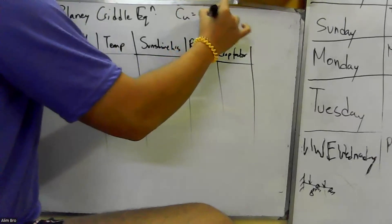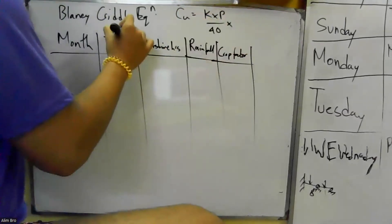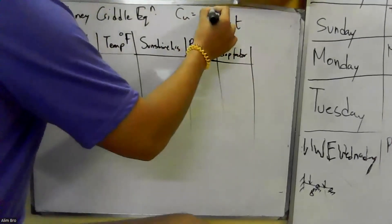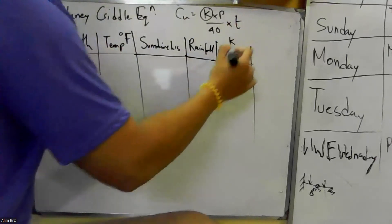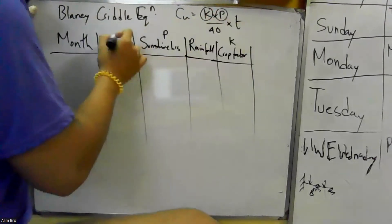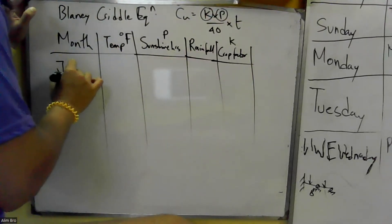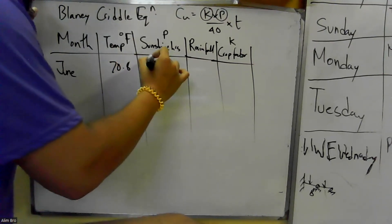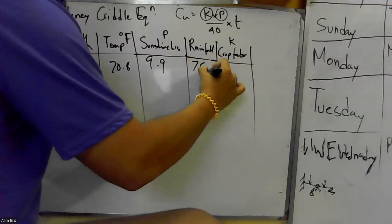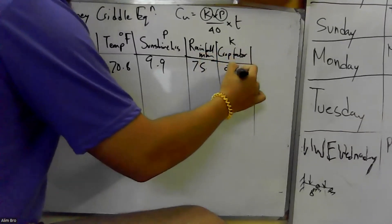CU equals K into P divided by 40 into T — temperature in degrees Fahrenheit. K stands for crop factor, T stands for sunshine hours. For example, for the month of June: temperature 70.8°F, sunshine hours 9.9 hours, rainfall 75 millimeters, crop factor 0.8.